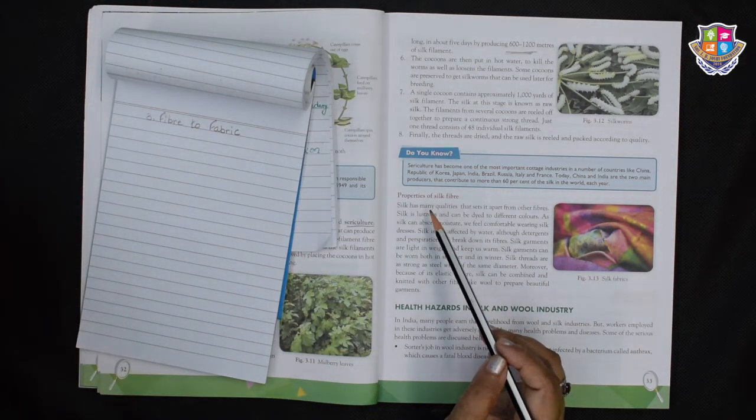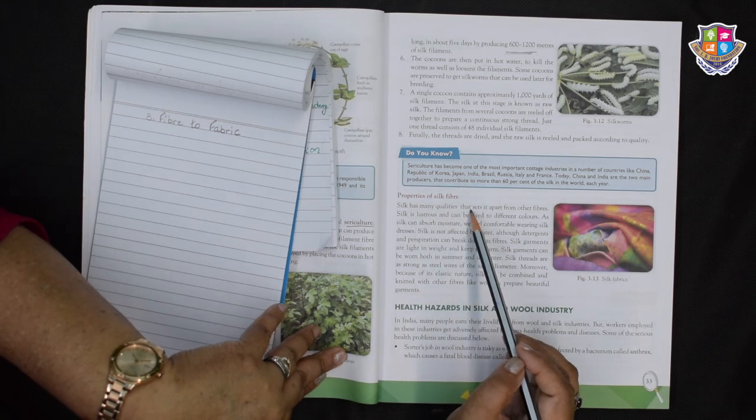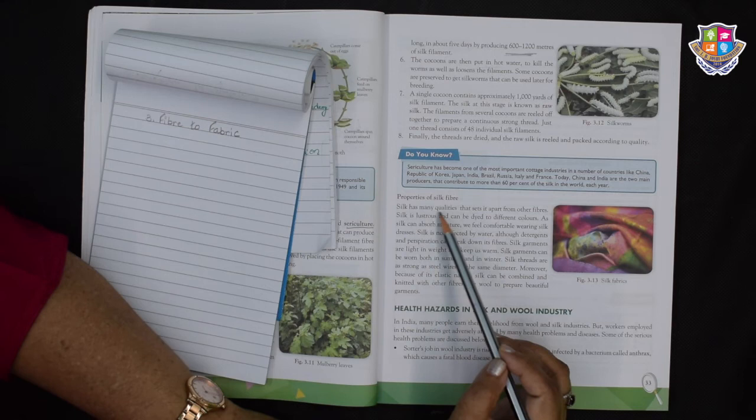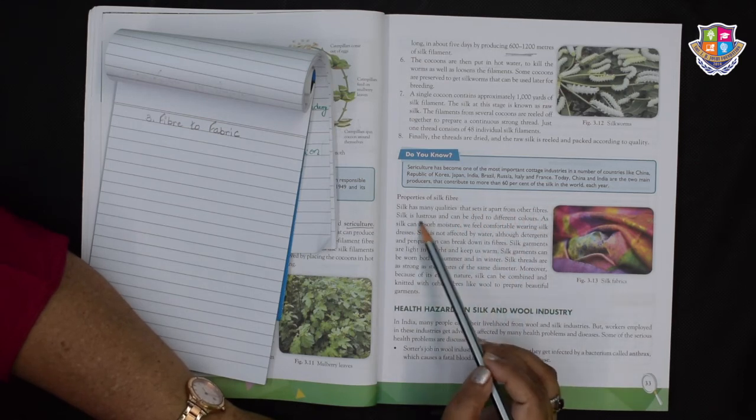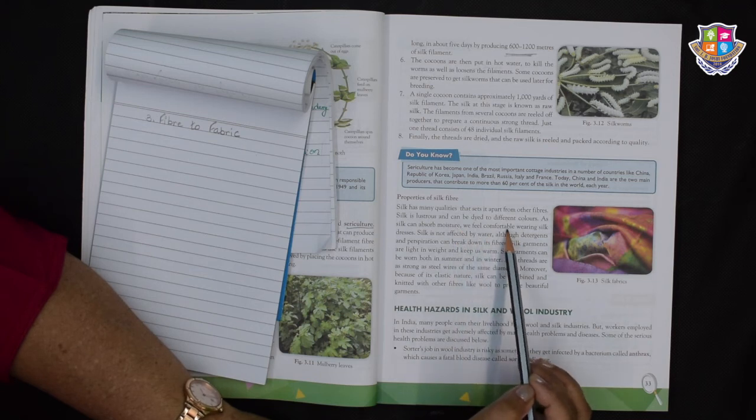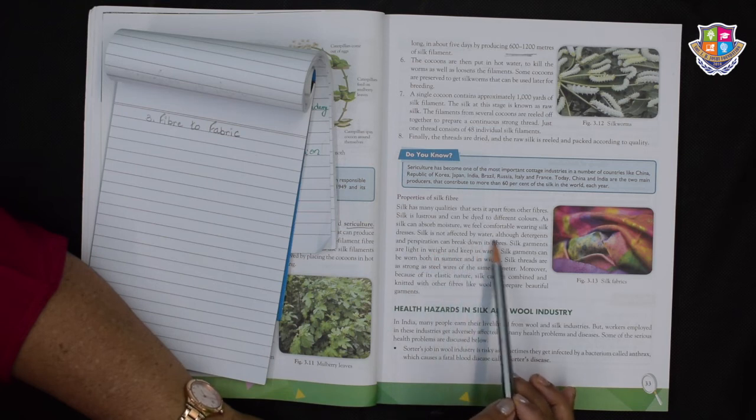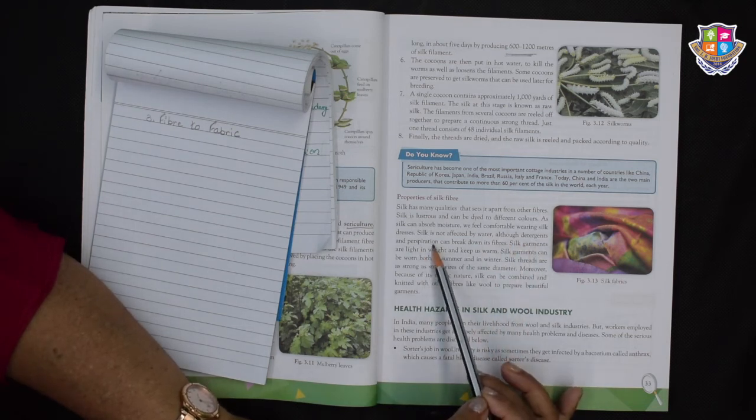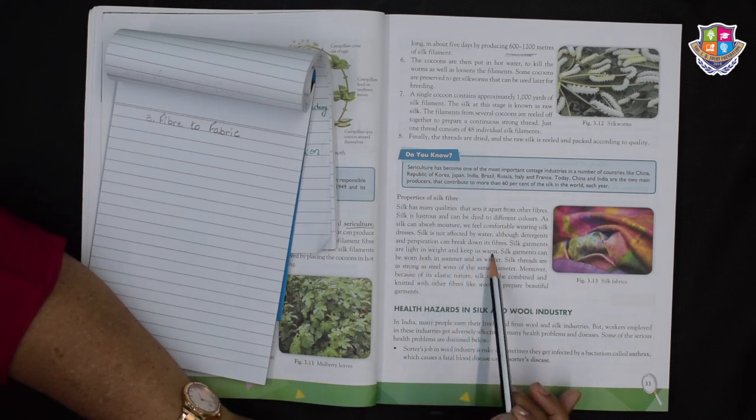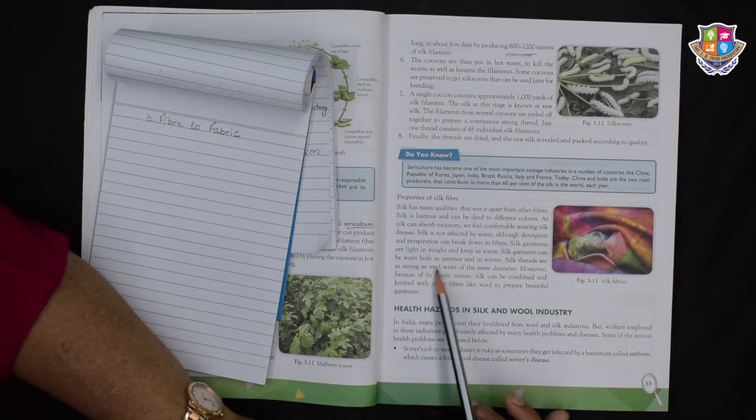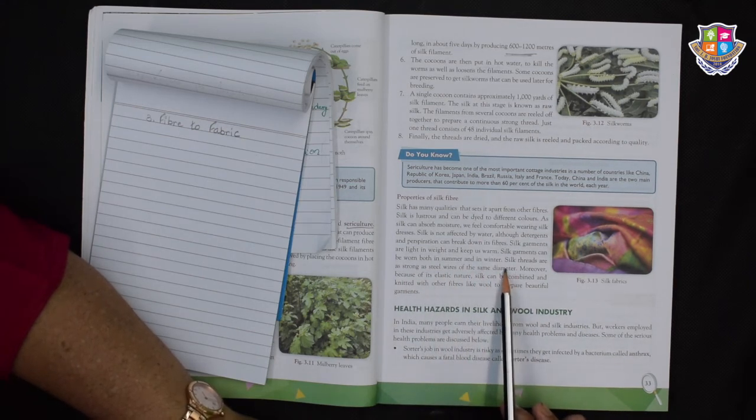Now let's see the properties of silk fiber. Silk has many qualities that sets it apart from the other fibers. Silk is lustrous and can be dyed to different colors. As silk can absorb moisture, we feel comfortable wearing silk dresses. Silk is not affected by water, although detergents and perspiration can break down its fibers. Silk garments are light in weight and keep us warm. Silk garments can be worn both in summer and in winter. Silk threads are as strong as steel wires of the same diameter. Can you imagine that?